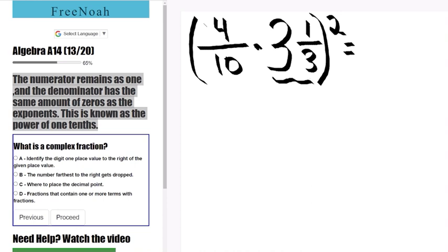First things first, we're going to change the mixed number into an improper fraction. So three times three is nine and nine plus one is ten. Rewrite four over ten times ten over three.